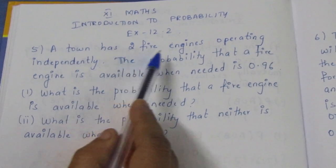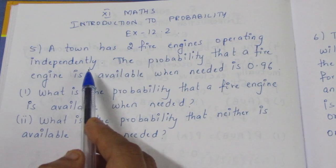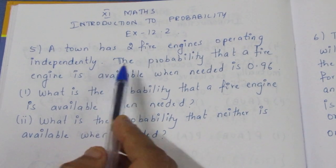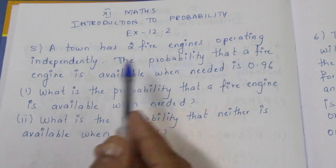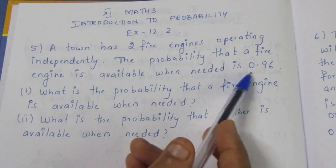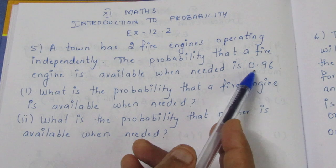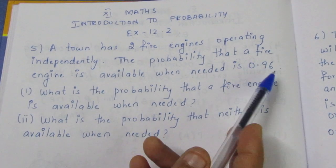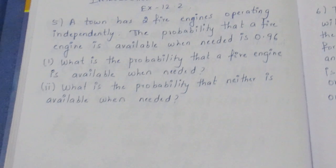A town has 2 fire engines operating independently. The probability that a fire engine is available when needed is 0.96. So both engines have a probability of 0.96.